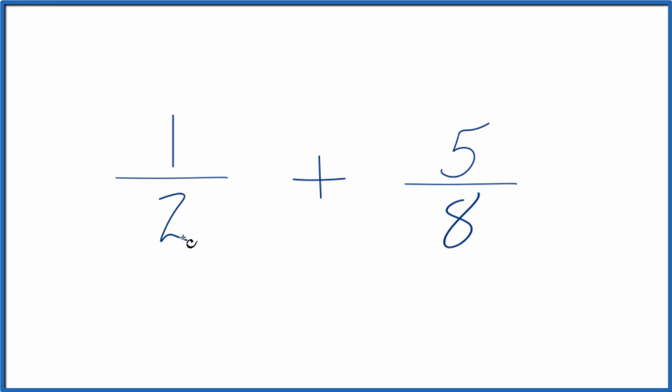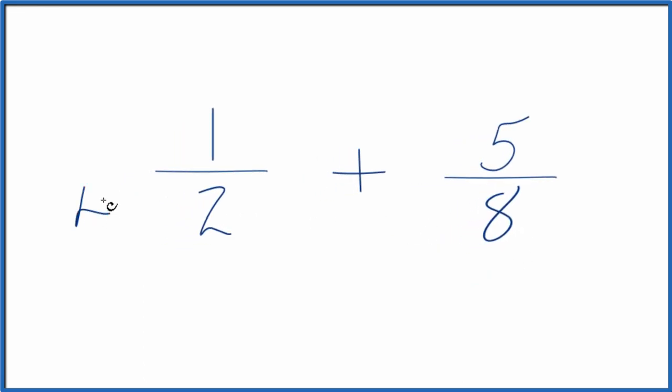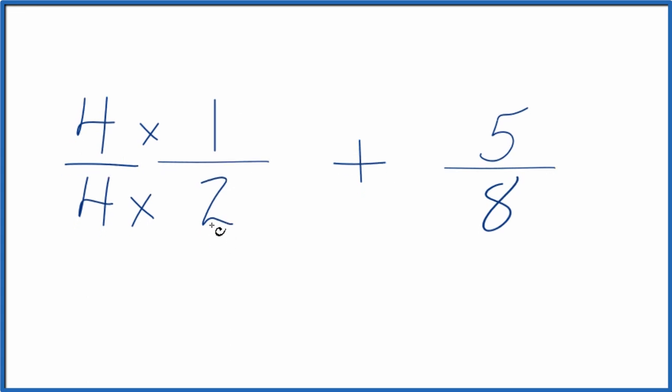I can see that two goes into eight four times, so I'm going to multiply four times two. That gives me eight, and then I have eight here. But I can't just multiply the denominator here by four. I need to also multiply the numerator. That's because four over four, you divide four by four, you get one. So we're just multiplying one-half by one. We don't change the actual value, just the way it's written.